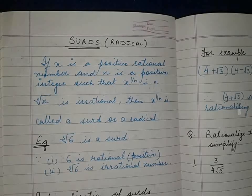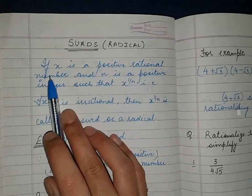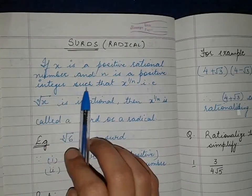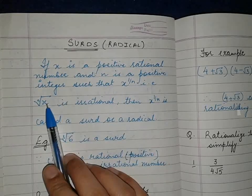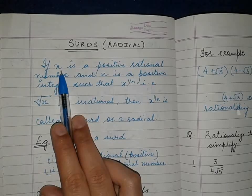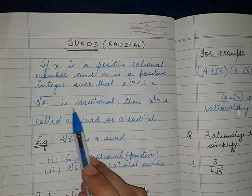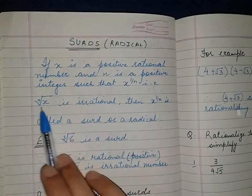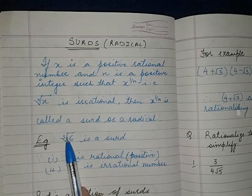We will be starting the next topic of chapter rational and irrational — that is surds or radicals. What is a surd? If x is a positive rational number and n is a positive integer such that x to the power 1 by n, that is the nth root of x, is irrational, then x to the power 1 by n is called a surd or a radical. Every surd is an irrational number.